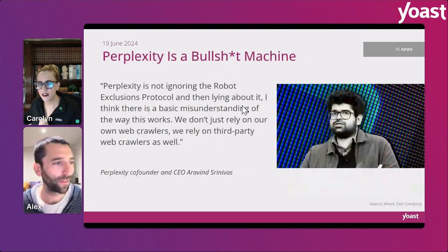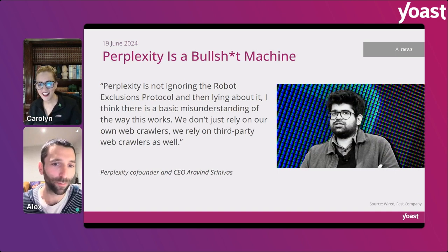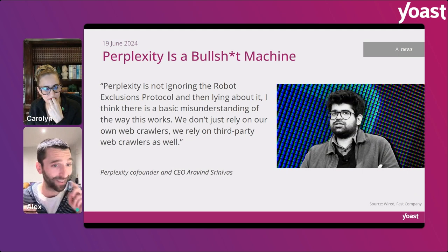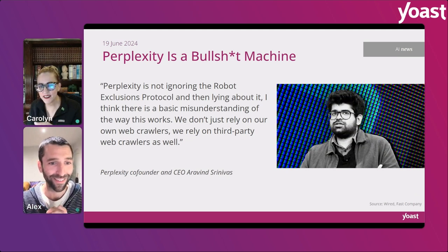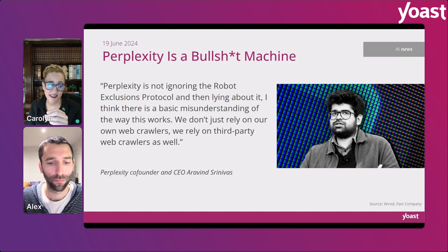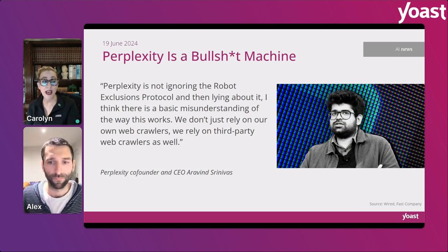This one has a headline with a bad word: 'Perplexity is a Bullshit Machine.' According to Wired, Perplexity — an AI — is crawling and including content from sites that have explicitly said they do not want to be crawled or used to train AI language models. Wired has what appears to be fairly strong evidence that their content has in fact been crawled and is being used.